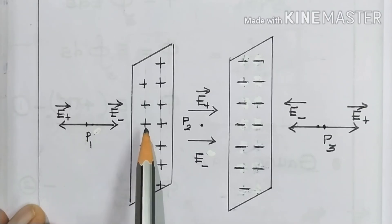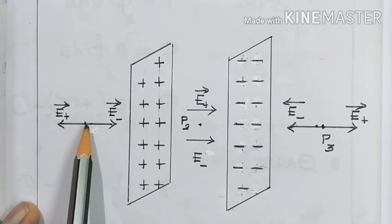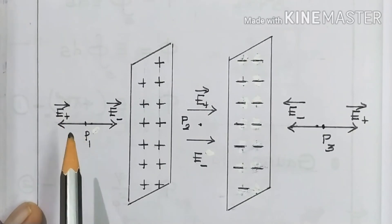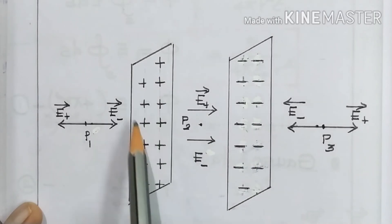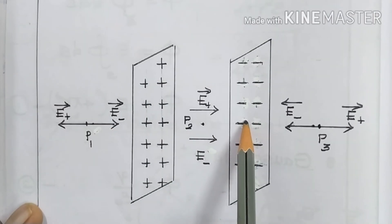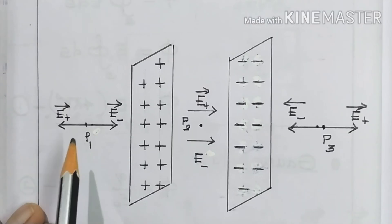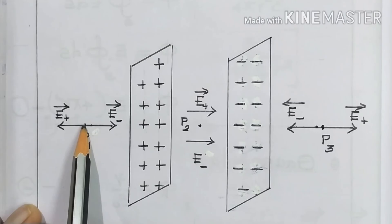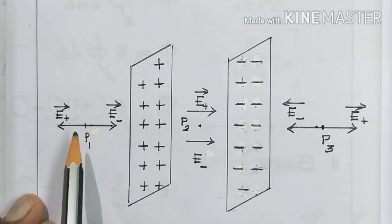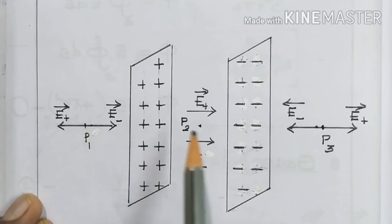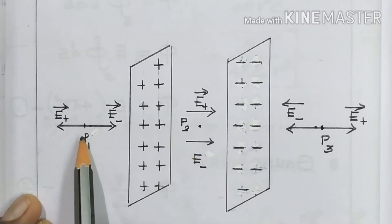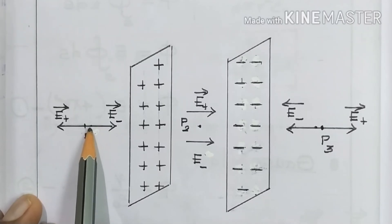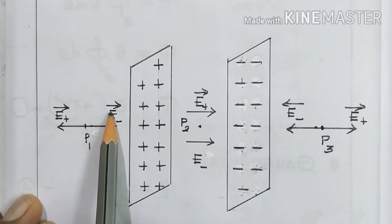The electric field due to the positive sheet at P1 is directed away from the sheet, and it is marked as E-plus vector. For the negative sheet, a test charge placed at P1 is positive in nature, and the negative sheet attracts this positive test charge. So the electric field lines are directed towards the negative sheet at P1, and I have written E-minus vector accordingly.